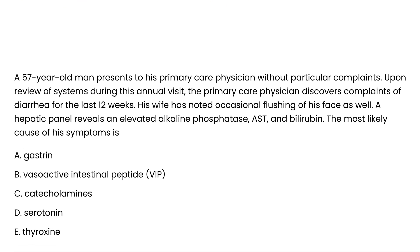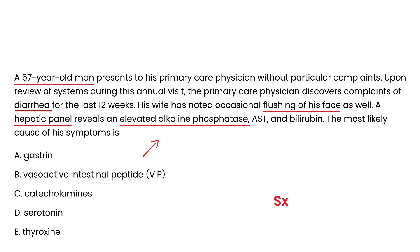A 57-year-old man presents to his primary care physician. Upon review of systems during his annual visit, the PCP reveals complaints of diarrhea. For the last 12 weeks his wife has noted occasional flushing of the face. A hepatic panel reveals elevated alkaline phosphatase, AST, and bilirubin. The most likely cause of his symptoms is carcinoid syndrome, given the symptomatology and evidence of liver involvement. Carcinoid involves several vasoactive substances, the most important of which is serotonin.